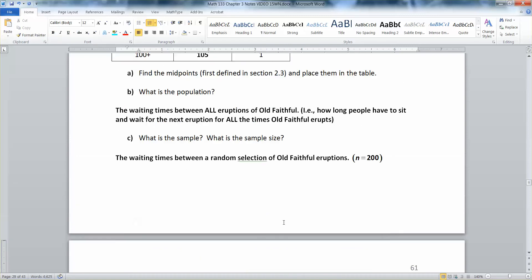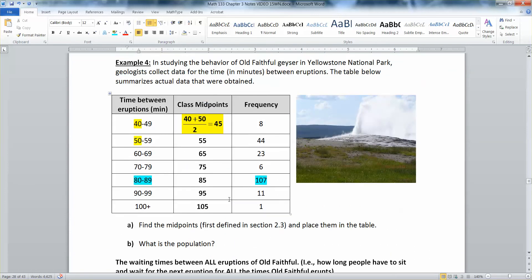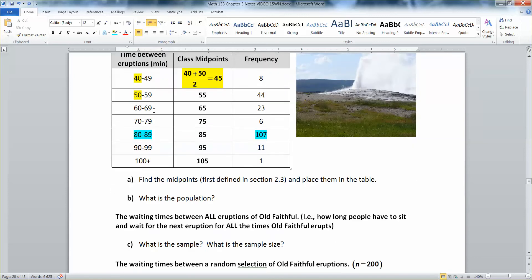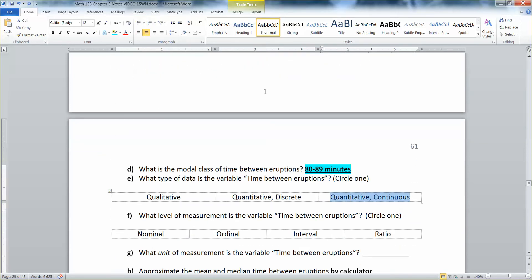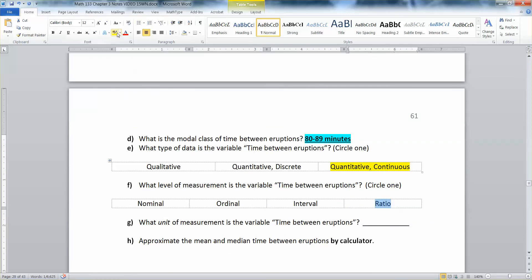The time between eruptions is what kind of data? This is the time, like stopwatch time. So it stops erupting and then the park rangers start a stopwatch, and then they wait for the next eruption to occur. That's stopwatch time. That's very much a quantitative continuous kind of thing. Stopwatch time is always continuous because it can have seconds, milliseconds, et cetera. And it is also ratio because you can't wait a negative amount of time. When it has no negatives possible, that's ratio. And the unit of measurement is, of course, minutes.